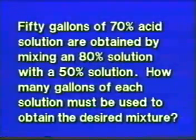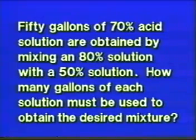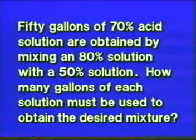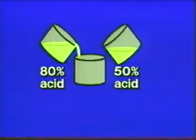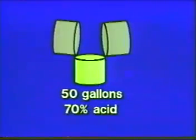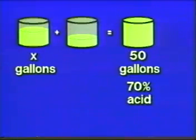Here's a mixture problem. 50 gallons of 70% acid solution are obtained by mixing an 80% solution with a 50% solution. How many gallons of each solution must be used to obtain the desired mixture? In building our mathematical model — our equation for solution — all we need to do is imagine the mixing process of these two liquids. Imagine two beakers, one with 80% acid solution and one with 50% acid solution, poured into a third beaker. The result of the mixture is 50 gallons of 70% acid solution.